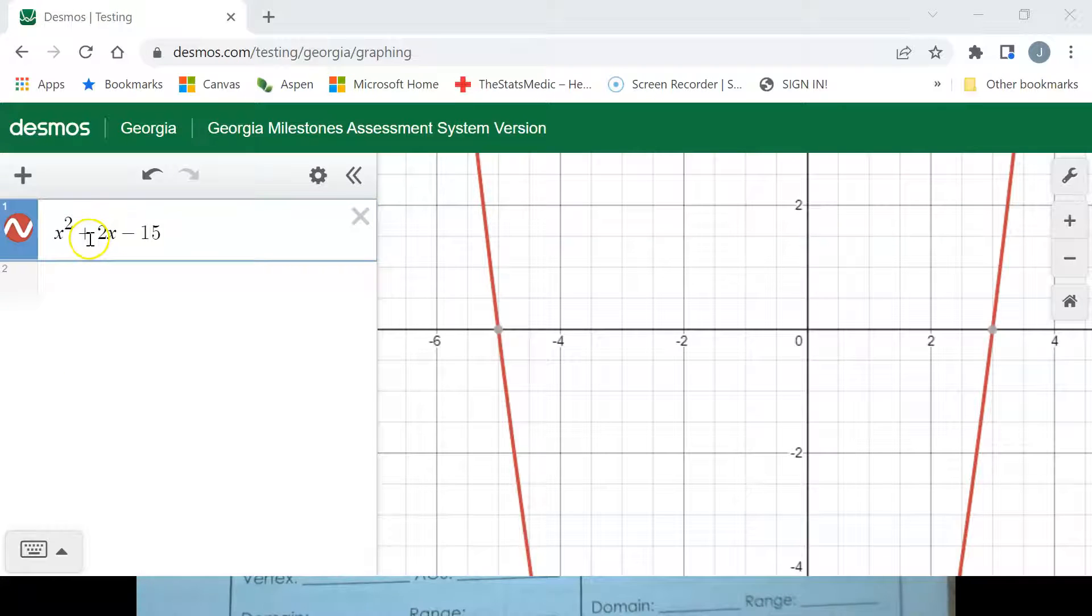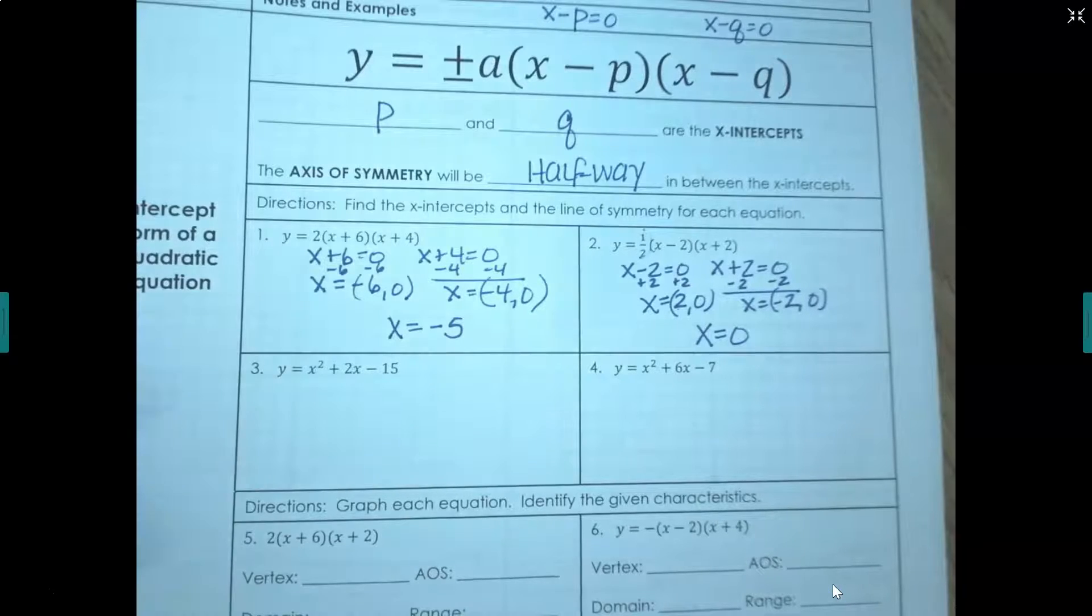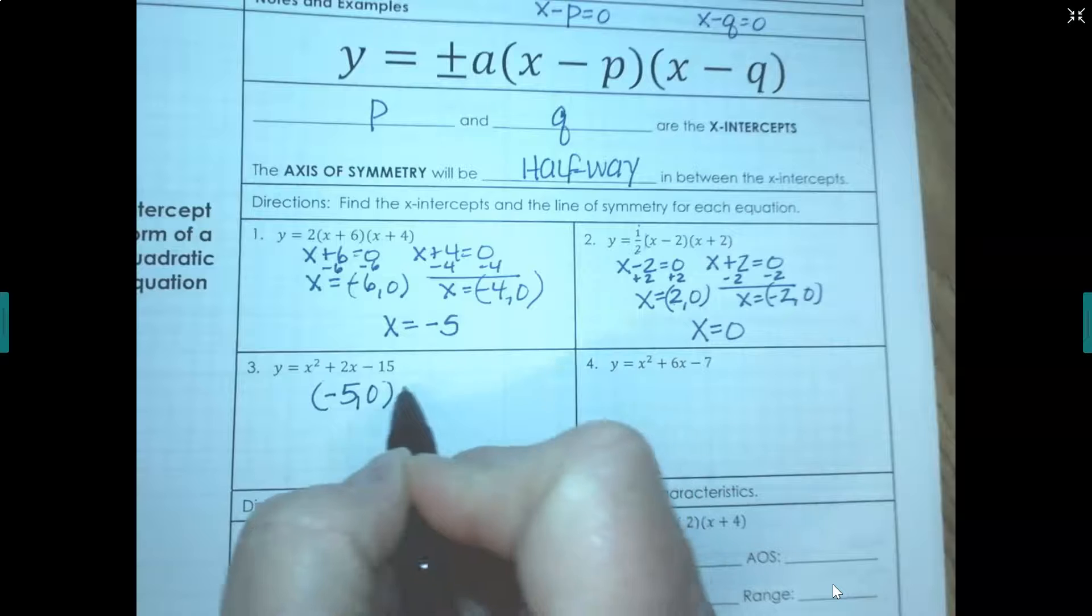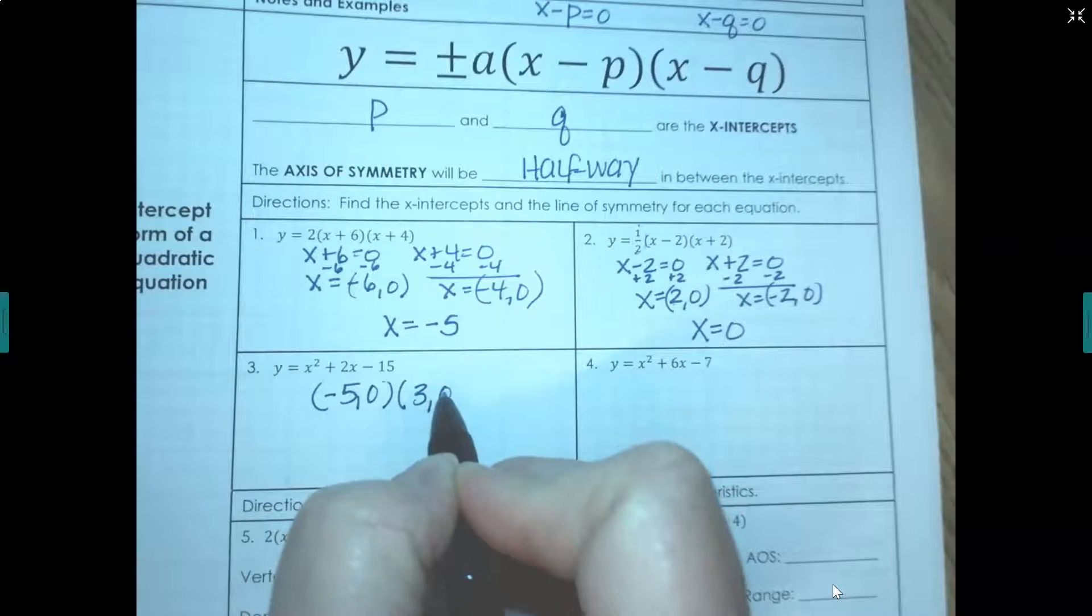So here's our graph, x squared plus 2x minus 15. It's graphed it for me. So I have an x-intercept at negative 5, 0 and 3, 0. So I know my intercepts. They are at negative 5, 0 and 3, 0.